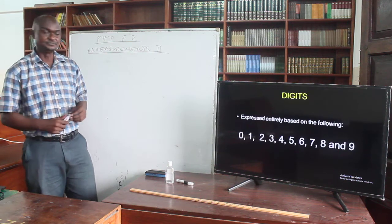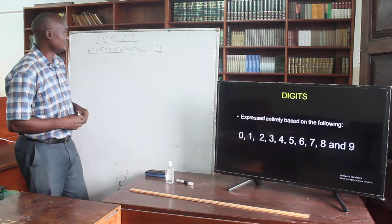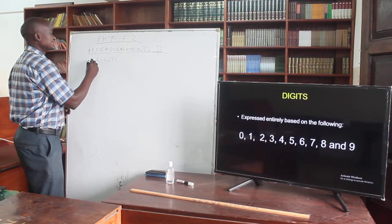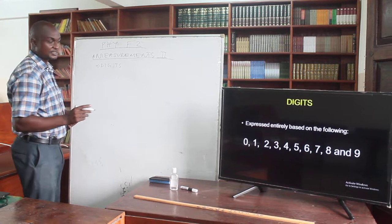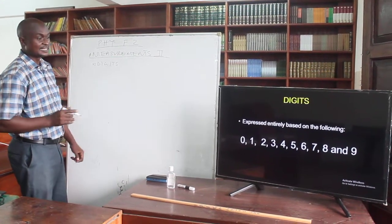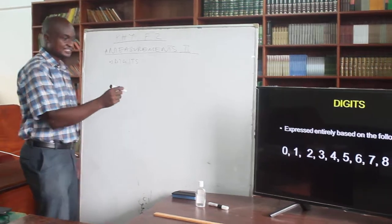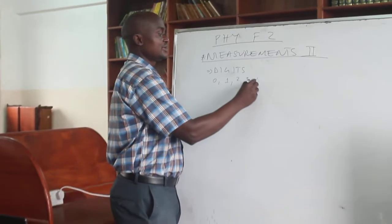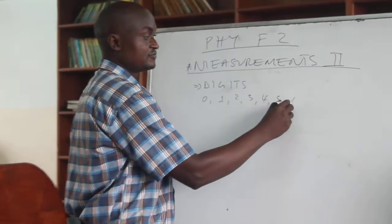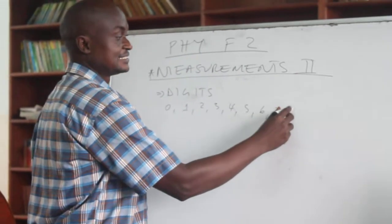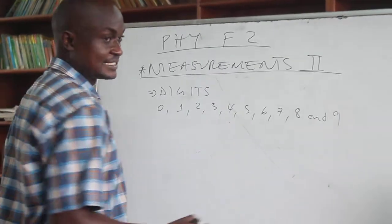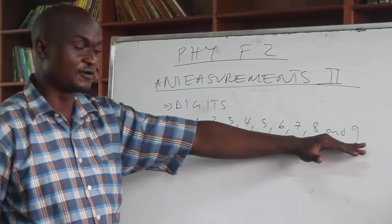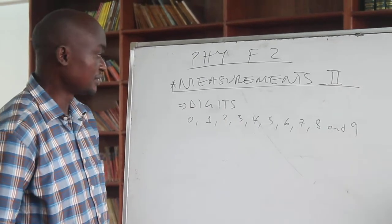When we talk about digits, which are the numerals we are going to focus on: digits refers to the Hindu-Arabic system where all numbers are based on ten basic digits. As you can see, there is zero, one, two, three, four, five, six, seven, eight, and nine. These are the single digits, which is the basis of all the numbers that we talk about in the Hindu-Arabic Numerals.